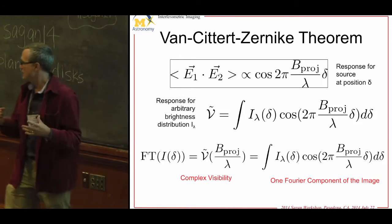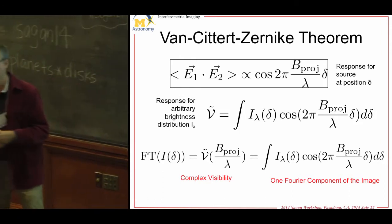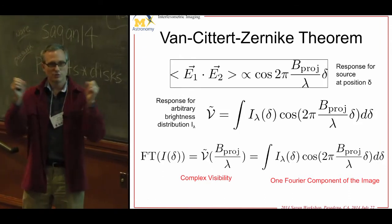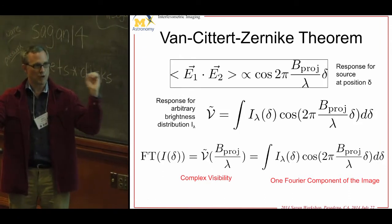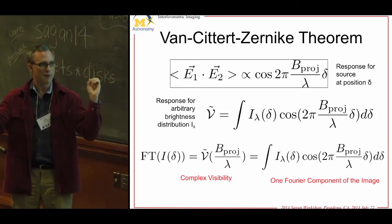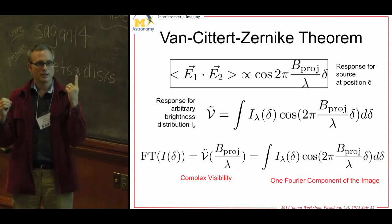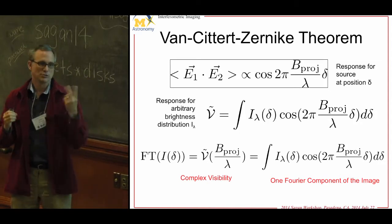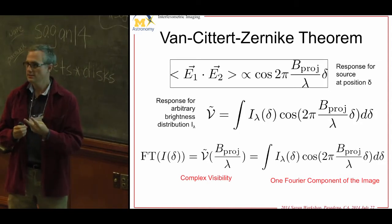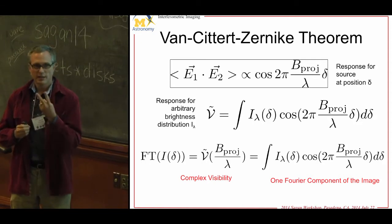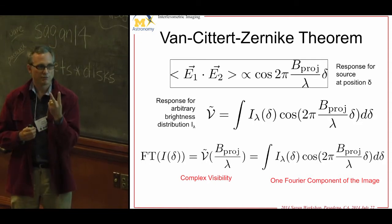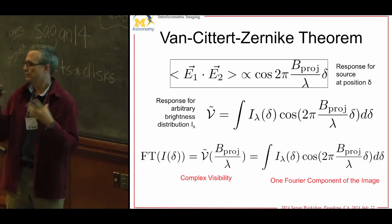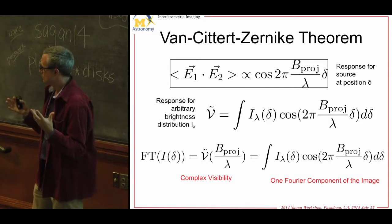It's a big reduction of information — you have a complex image with planets, disks, jets, whatever might be in it. With a two-aperture interferometer, you measure the interference and get basically two numbers: an amplitude and a phase of your fringe. That's not much information compared to an image with hundreds of pixels.